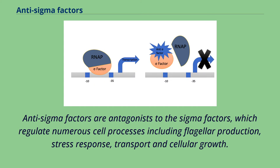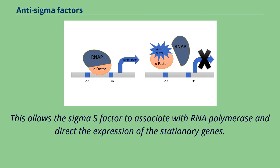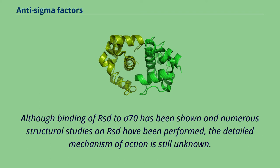Anti-sigma factors are antagonists to the sigma factors, which regulate numerous cell processes including flagellar production, stress response, transport, and cellular growth. For example, anti-sigma factor 70 RSD in E. coli is present in the stationary phase and blocks the activity of sigma factor 70, which initiates gene transcription. This allows the sigma S factor to associate with RNA polymerase and direct the expression of the stationary genes. Although binding of RSD to sigma 70 has been shown and numerous structural studies on RSD have been performed, the detailed mechanism of action is still unknown.